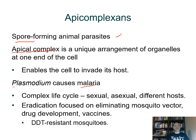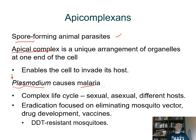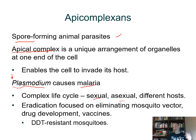The parasite that causes malaria belongs to the genus Plasmodium — italicized and capitalized, indicating it's a genus. There are many species of Plasmodium that can cause disease; Plasmodium vivax is one. They have a complex life cycle involving both sexual and asexual reproduction and different hosts. The actual life cycle is even more complex than shown in the textbook — the CDC website has a detailed version.